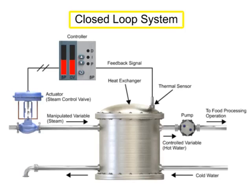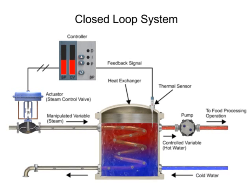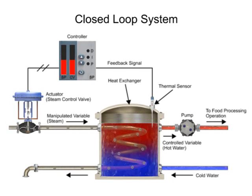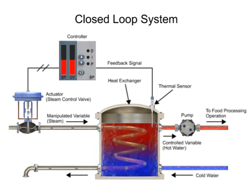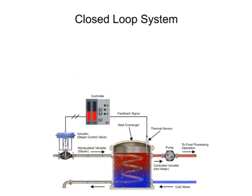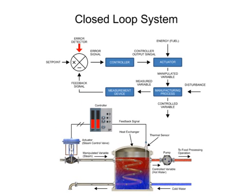The function of a closed-loop system is to monitor and automatically maintain a variable at a desired set point in a manufacturing process. Using an example of a heat exchanger, the operation of a closed-loop system is compared with a block diagram.